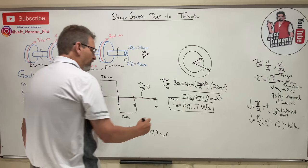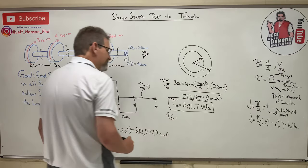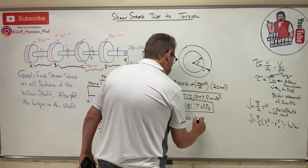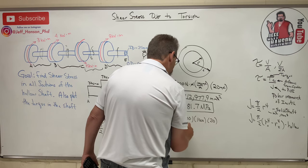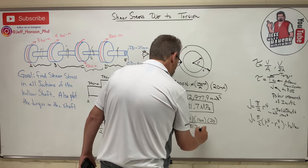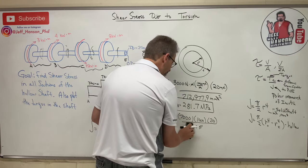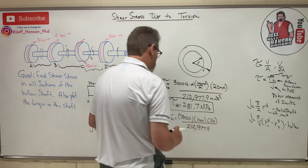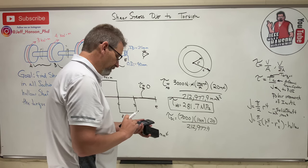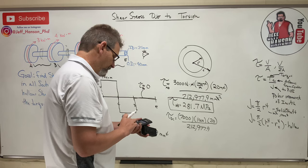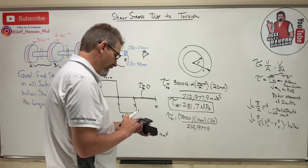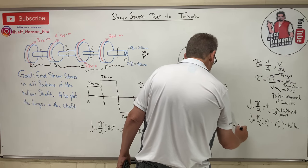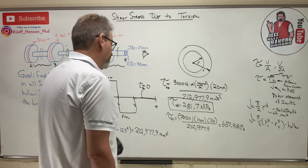For section BC, the only difference is T = 7,000 N·m. Using the same c and J: τ_BC = 7,000 × 1,000 × 20 / 212,977.9 = 657.3 MPa.